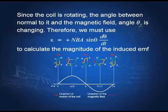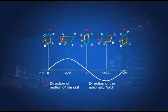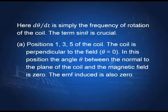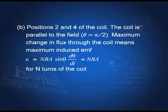When theta is zero — that is, when the coil is oriented so that the normal to the coil is parallel to the field — the induced EMF is zero. When the coil is perpendicular to the magnetic field, theta is 90 degrees and we have the maximum induced EMF. So in one half cycle the EMF goes positive, and in the other half cycle it goes negative. The maximum value of the EMF is simply NBA.